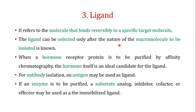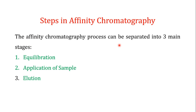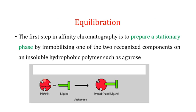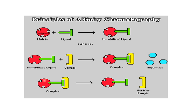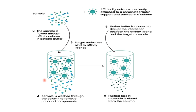We discussed the three steps in affinity chromatography: the first step was equilibration, the second was application of the sample, and the third was elution. All of these steps were covered in greater detail in Part 1 — that was an overview of the whole process.